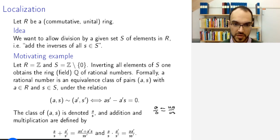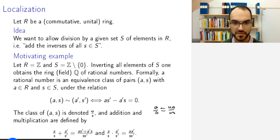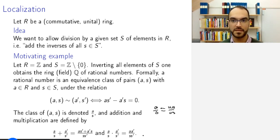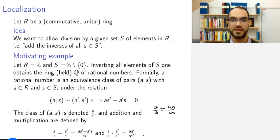Then you define addition and multiplication of such equivalence classes in the way you remember from primary school, and this gives you precisely the rational numbers.